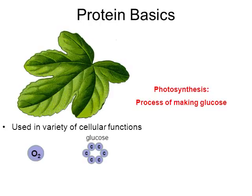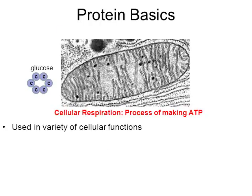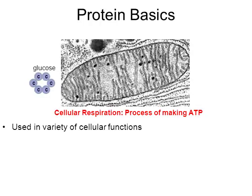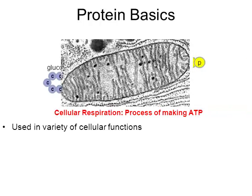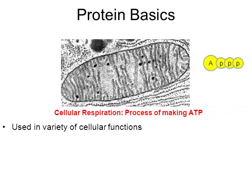Here's another example where proteins are used in cellular functions. The mitochondria does a process called cellular respiration. The mitochondria is an organelle — a part of your cell — and its job is to take in glucose and produce a molecule called ATP, an energy molecule. Later on in the school year, we'll learn about this in more detail.